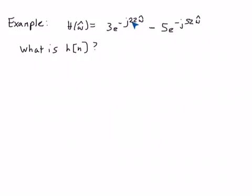So this says, this 22 here says, this 3 is the value when n is equal to 22. So h of n is going to be 3 delta of n minus 22. And then this coefficient is associated with the term at 52. So it's minus 5 delta of n minus 52.